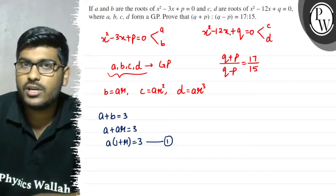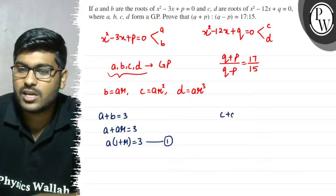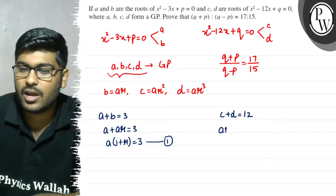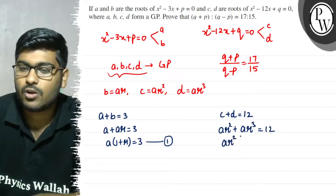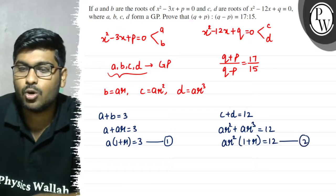From the second equation, the sum of roots c plus d equals 12. Since c equals ar squared and d equals ar cubed, we get ar squared into 1 plus r equals 12. Let's call this equation number 2.